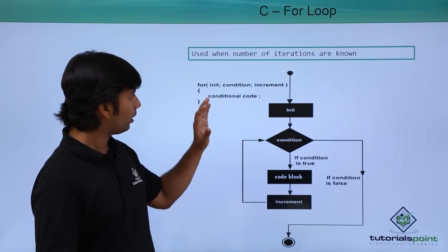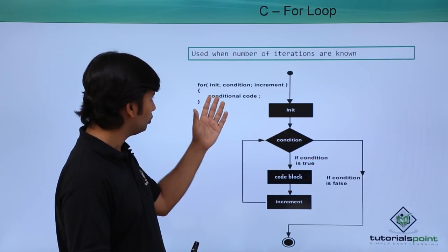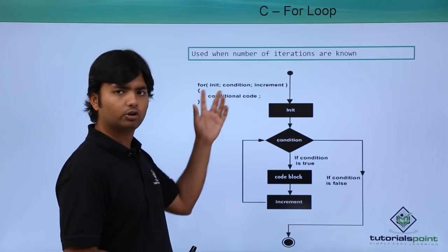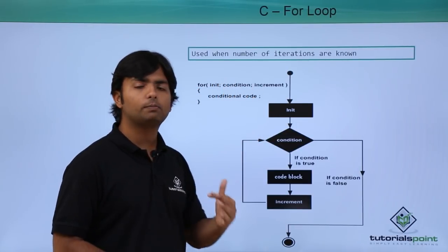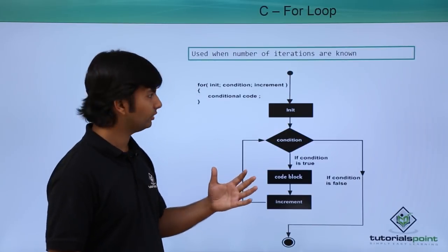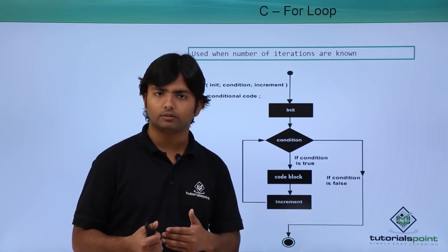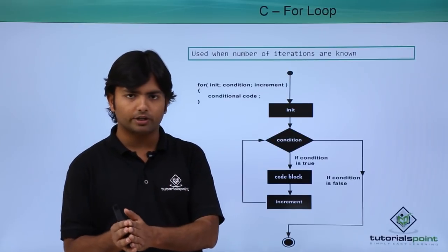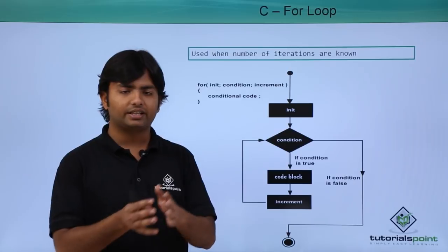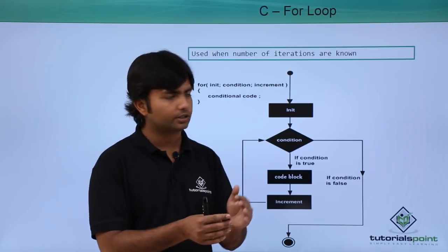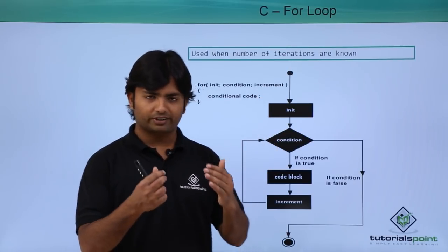Let's see the syntax. After the keyword 'for' you have parentheses, and inside you pass three statements: the first is initialization — the starting point; the second is the condition — the ending point; and the third is the increment or decrement.